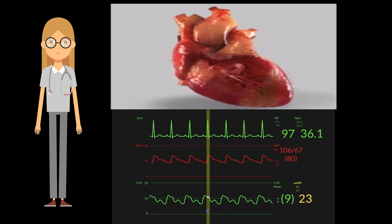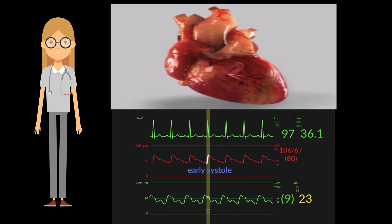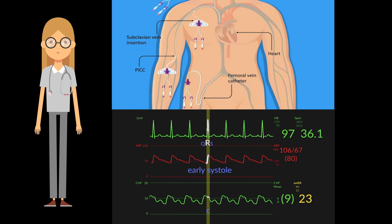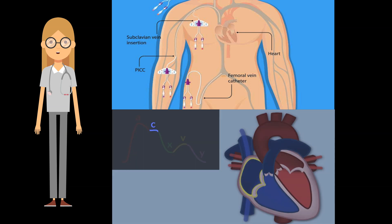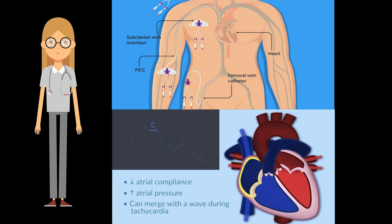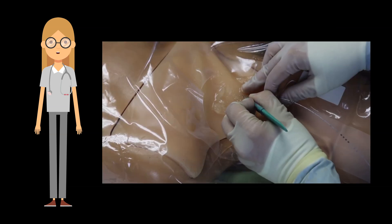CVP monitoring helps to assess cardiac function, evaluate venous return to the heart, and indirectly gauge how well the heart is pumping. The central venous catheter also provides access to a large vessel for rapid, high-volume fluid administration and allows frequent blood withdrawal for laboratory samples. CVP monitoring can be done intermittently or continuously. The catheter is inserted percutaneously or using a cut-down method.